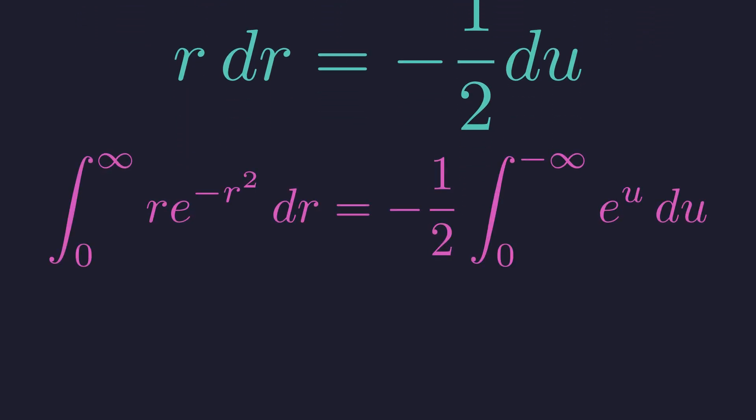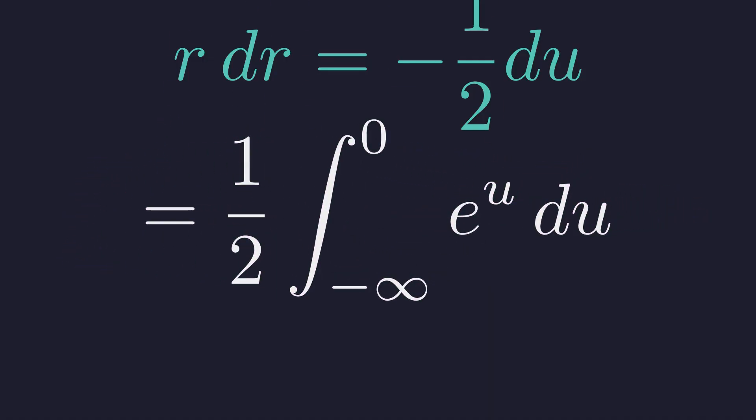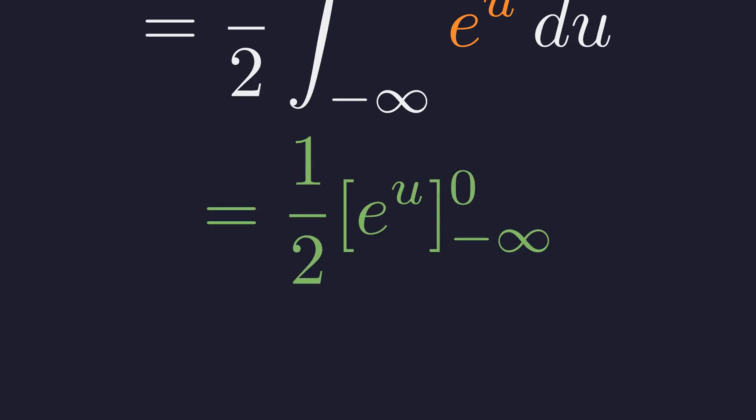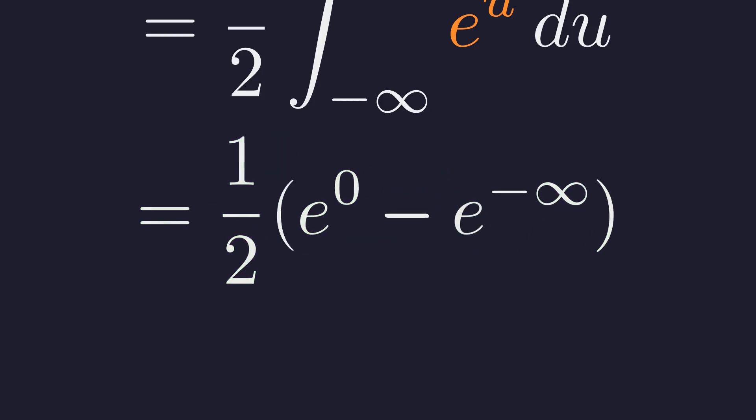Making the substitution, we get negative 1 half times the integral from 0 to negative infinity. We can flip these limits by removing the negative sign. This gives us 1 half times the integral from negative infinity to 0. The antiderivative of e to the u is just e to the u. We evaluate from negative infinity to 0.